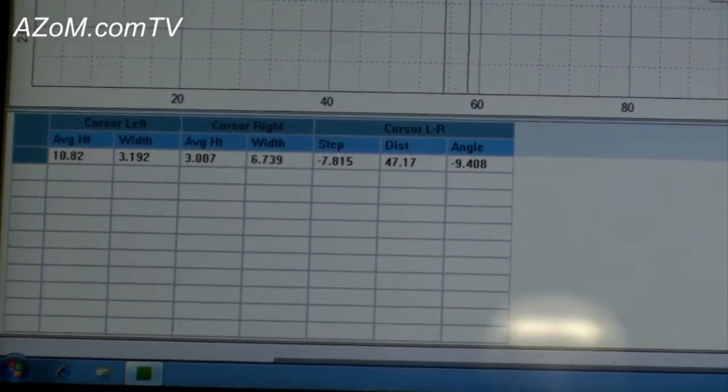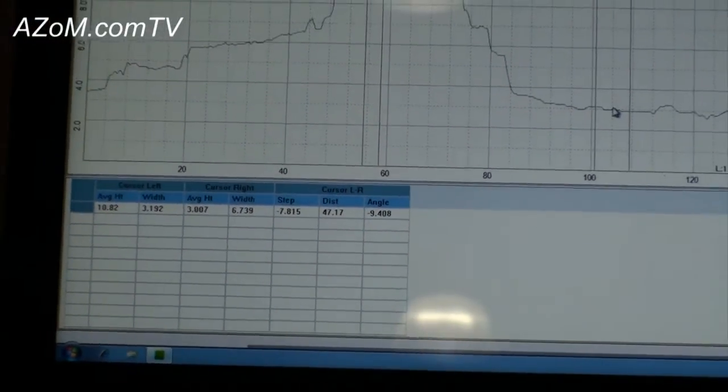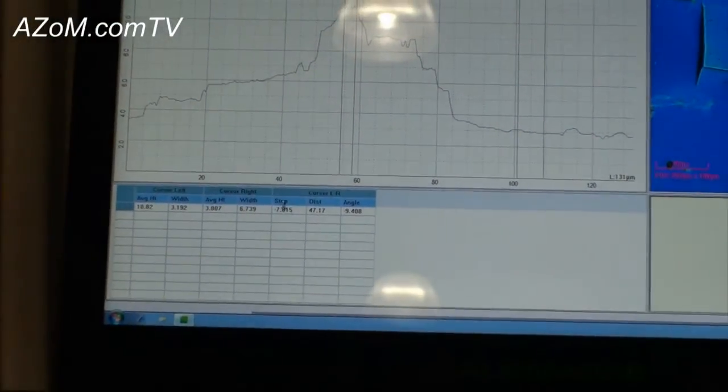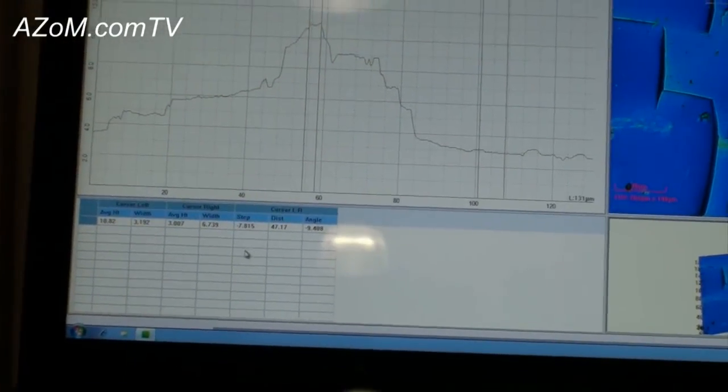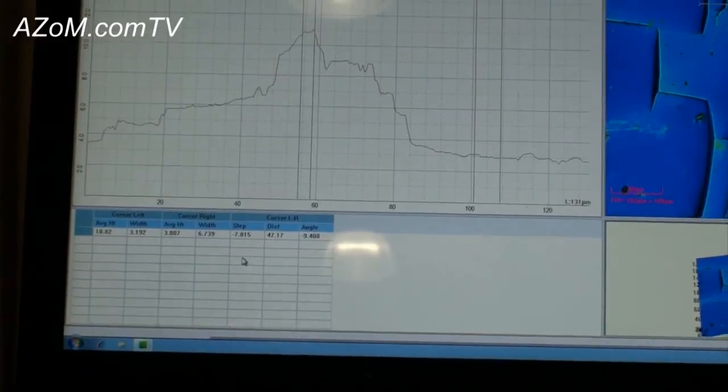Most importantly, if I wanted to know this particular feature, which can be any sample type, I would be measuring a step down in this case, minus 7.8 microns. So it's an optical profiler.